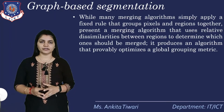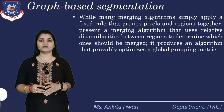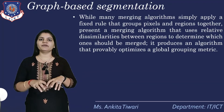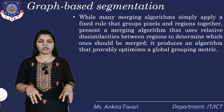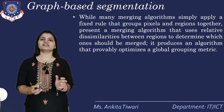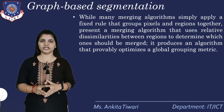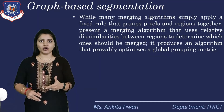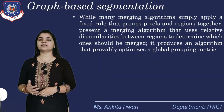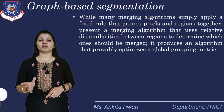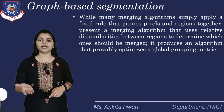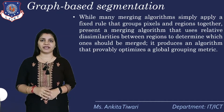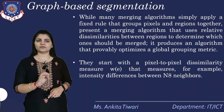Whenever you want to merge regions, there should be some specific similarity between the groups. If we are merging two groups, there will always be a dissimilarity between them. So relatively, the dissimilarities between the two merging regions are considered. We will be determining whether they should be merged or not, because there should be a dissimilarity present between the two of them in order to merge. In order to produce an algorithm that utilizes a global grouping metric, known as graph based segmentation, they start with pixel-to-pixel dissimilarity.